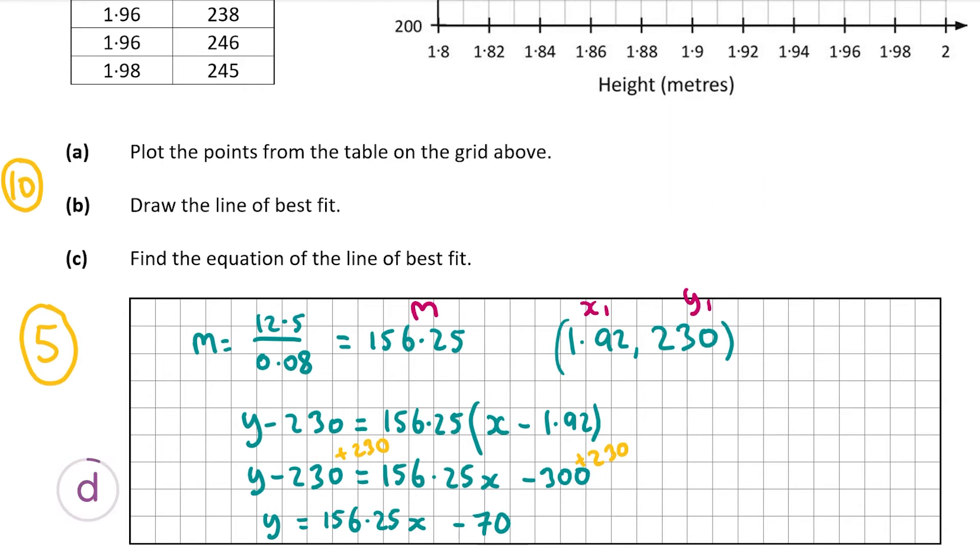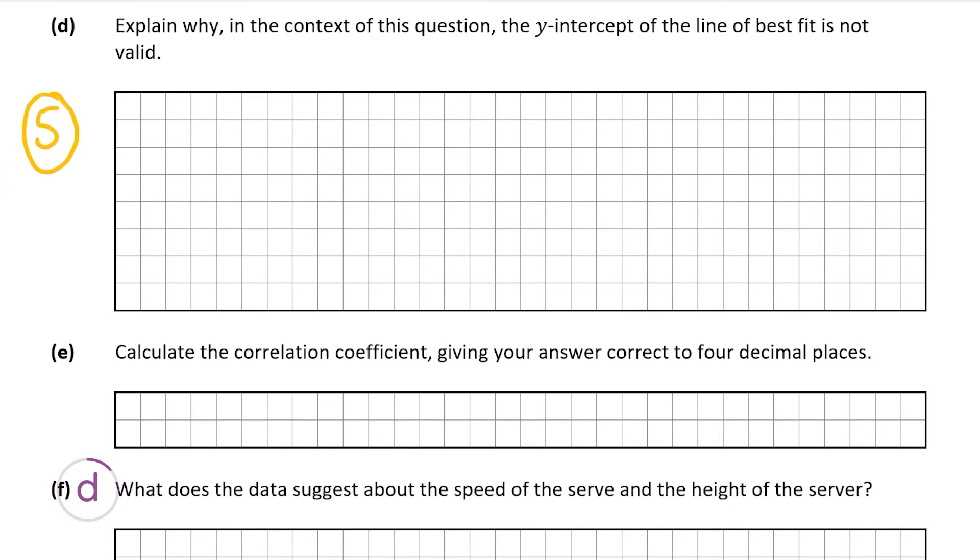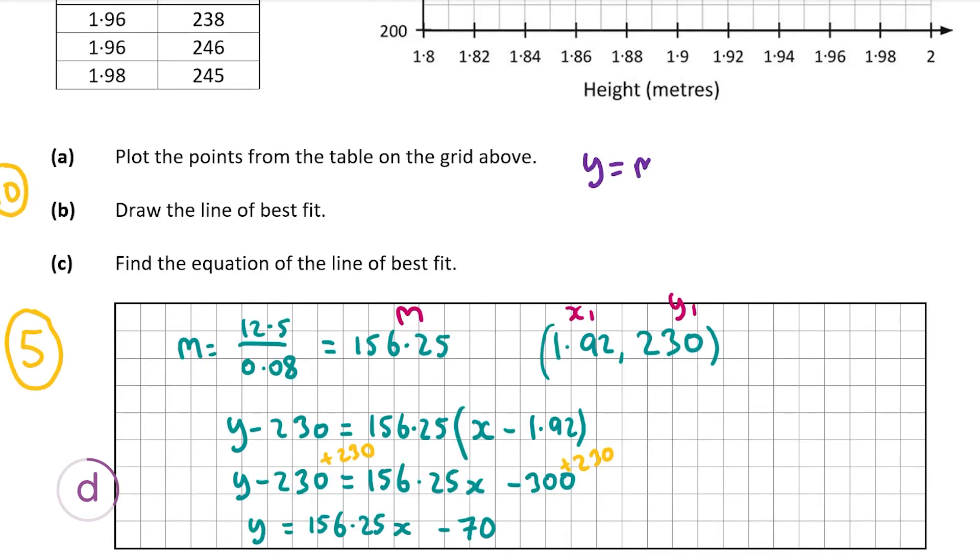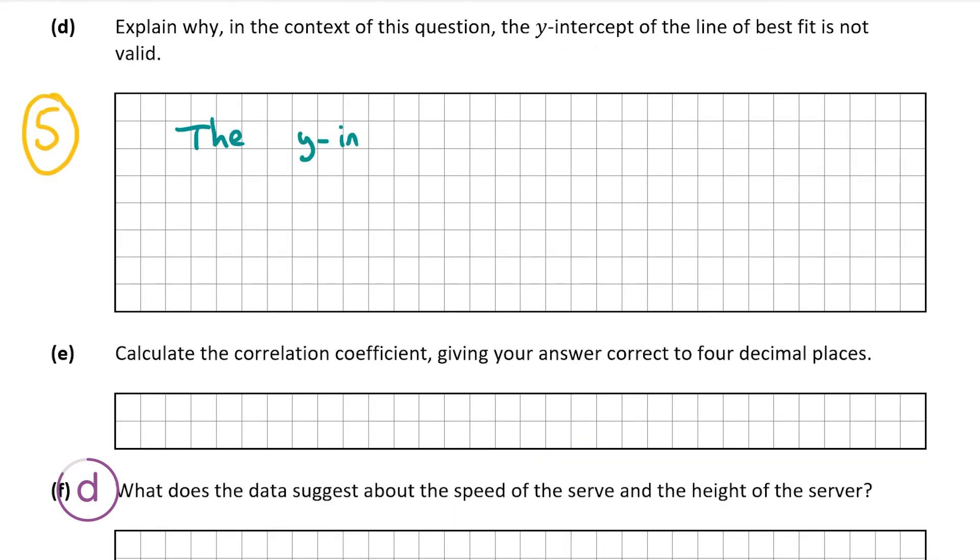So now we're going to look at part D of the question and part D is also worth five marks. This asks us to explain why in the context of this question the y-intercept of the line of best fit is not valid. The y-intercept when you have an equation in the form y equals mx plus c, the c is the y-intercept. So therefore in our equation y equals 156.25x minus 70, the minus 70 is the y-intercept. However this is a negative value and height can only be a positive value, so therefore that is why it is not valid in the context of this question.